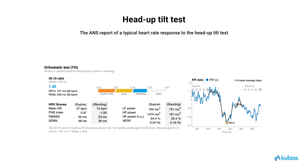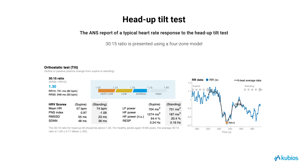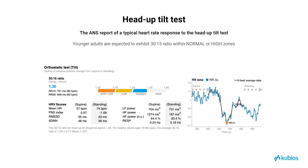Ewing et al. observed in 1985 that heart rate typically reaches its maximum around the 15th beat following the transition to an upright position, followed by a relative bradycardia leading to a local minimum around the 30th beat. The ratio between the longest RR interval around the 30th beat and the shortest RR interval around the 15th beat is defined as the 30-15 ratio. In QBOs HRV software, the 30-15 ratio is presented using a four-zone model based on reference values for healthy adults. A 30-15 ratio within the very low zone is considered abnormally low for healthy adults across all age groups. Younger adults, specifically those under 40 years of age, are expected to exhibit a 30-15 ratio within the normal or high zones.